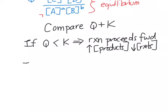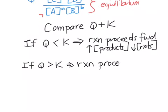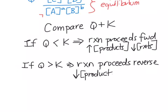If Q is greater than K, the reaction will proceed backwards. This is because we have too many products and not enough reactants, so we're going to decrease the concentration of our products and increase the concentration of our reactants.